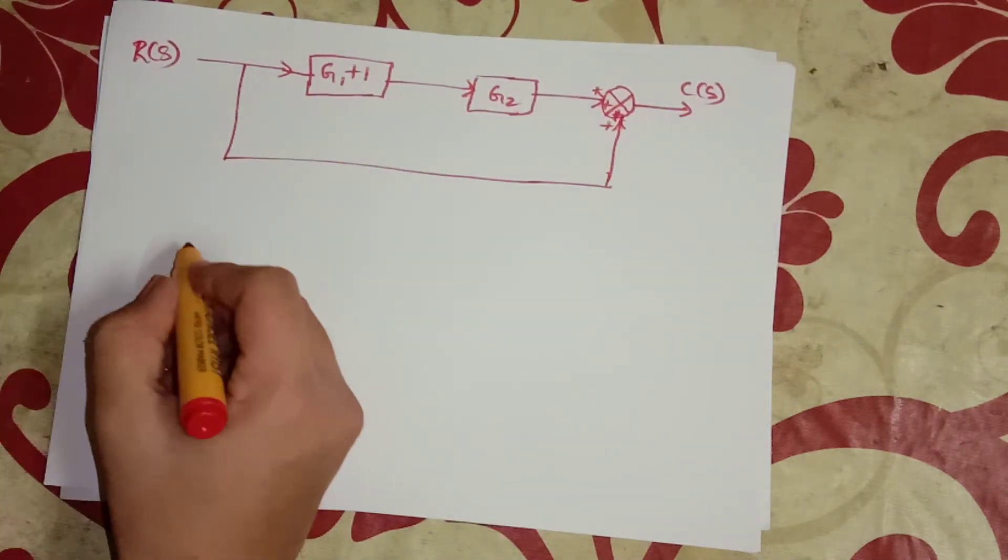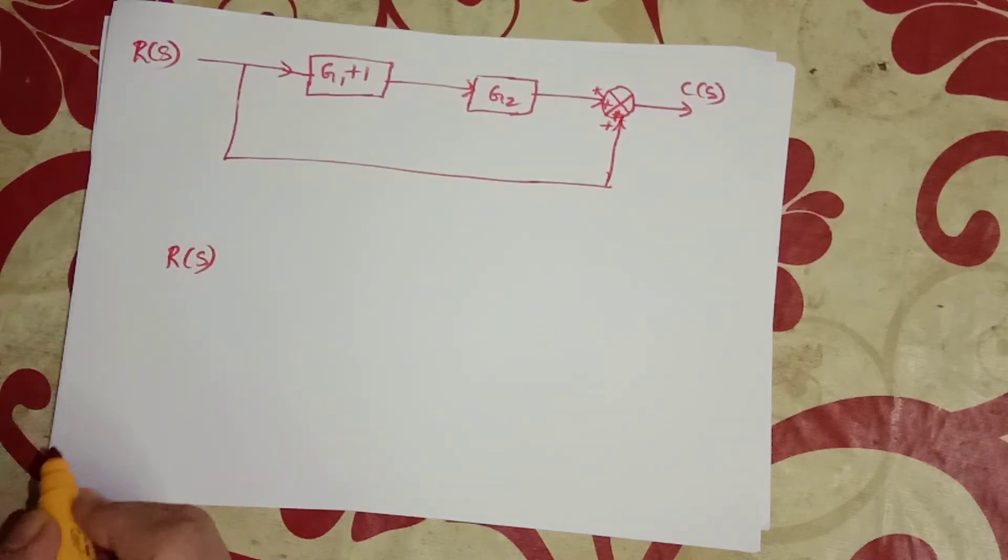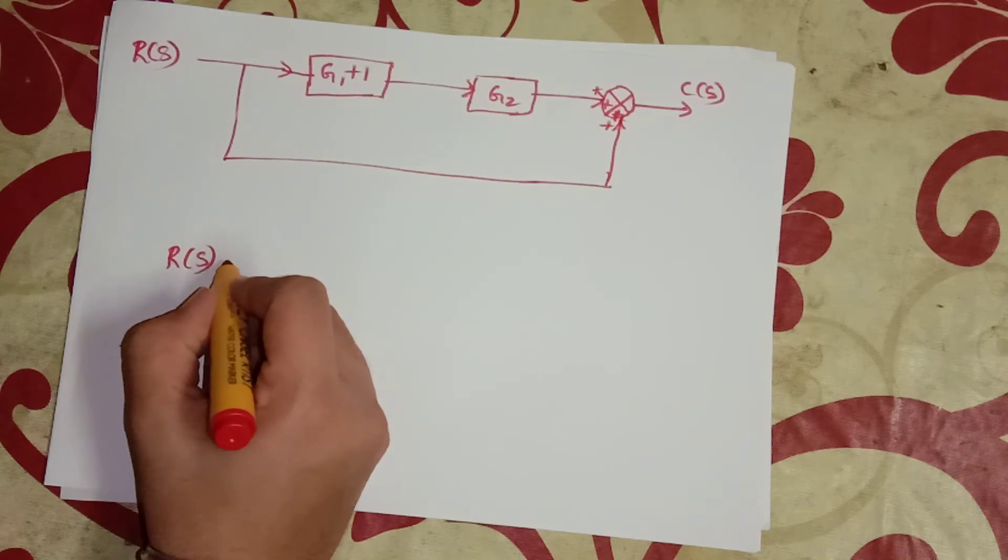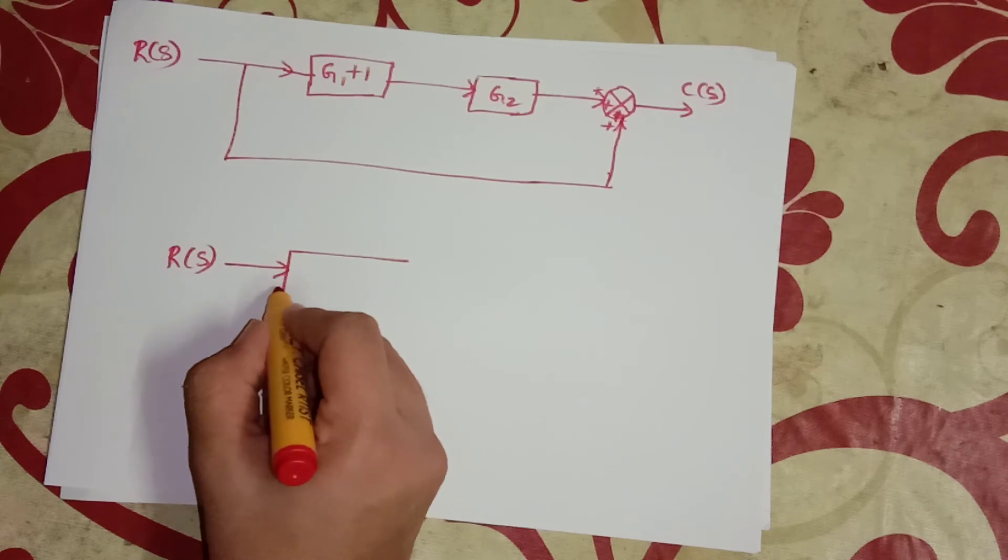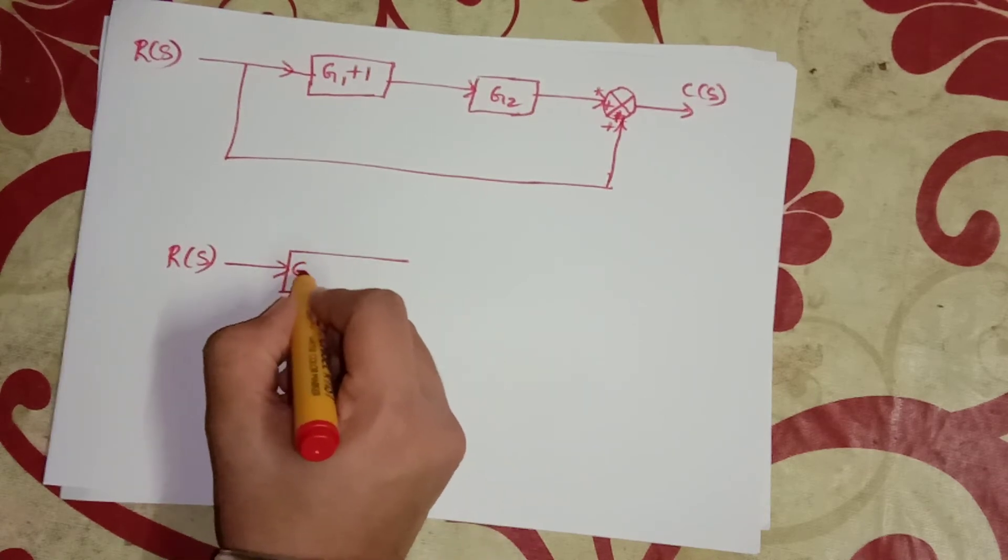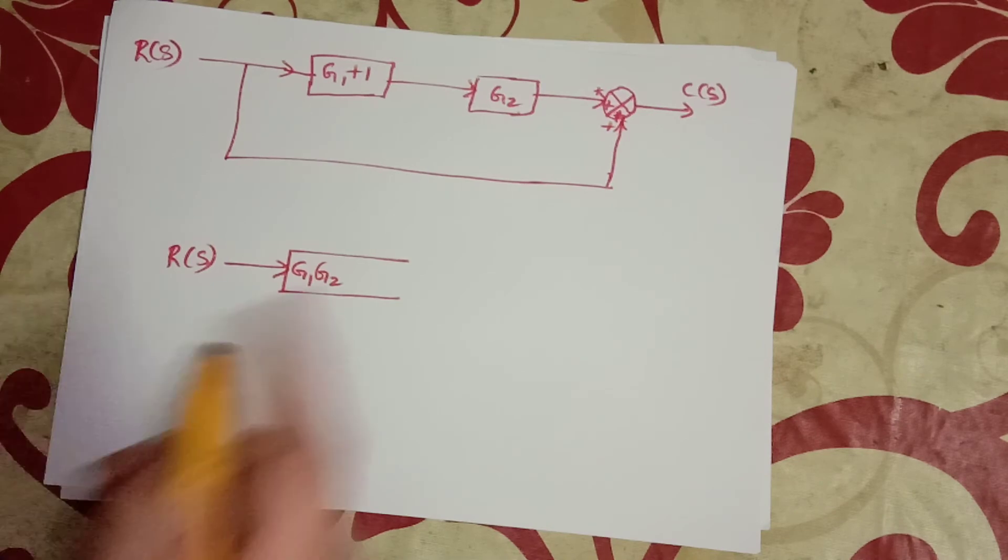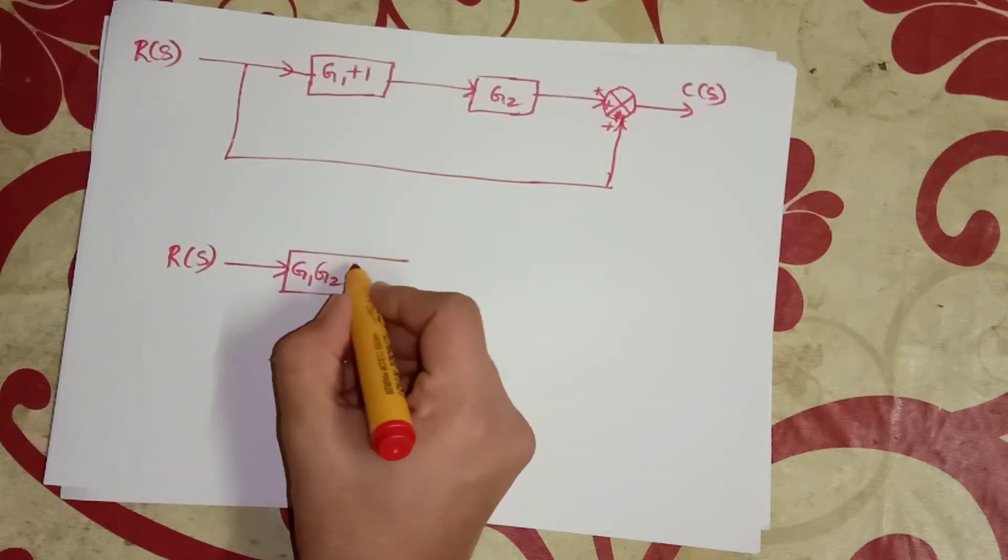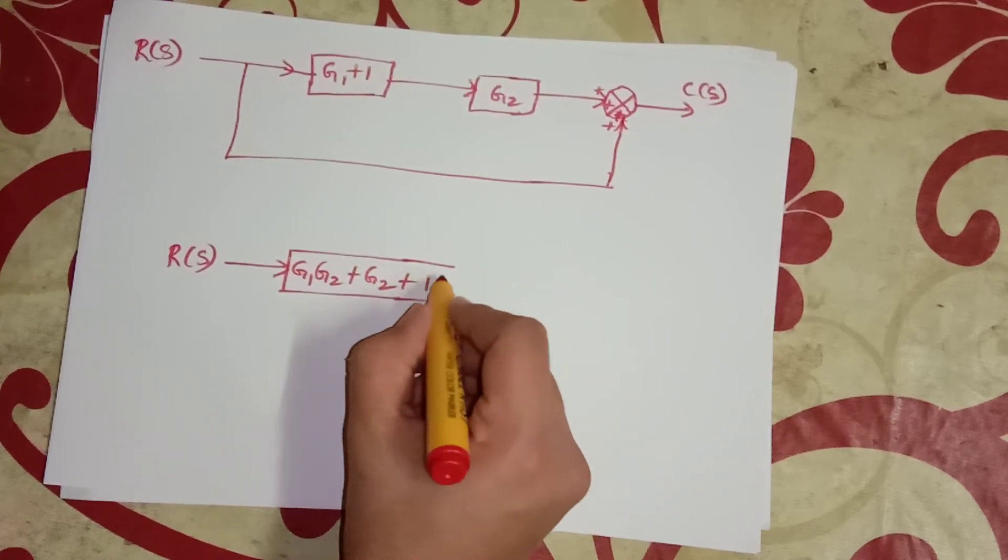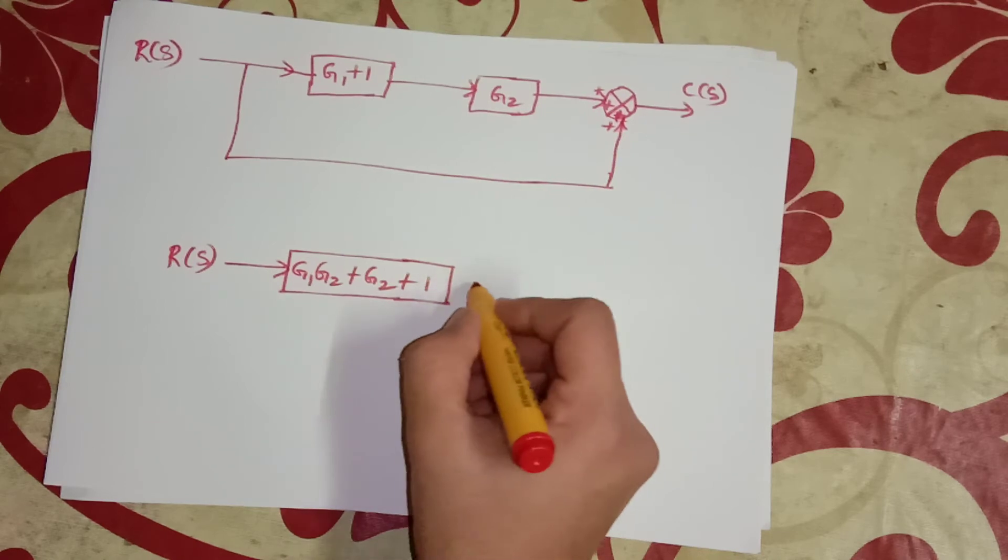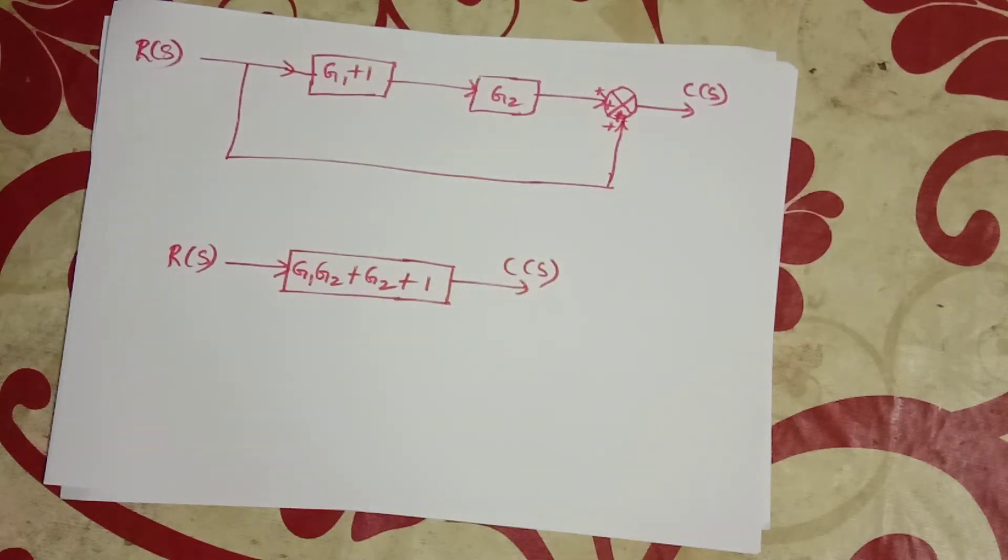Finally we will get the answer as R of S equals G1 G2 plus G2 plus 1, times G1 C of S.